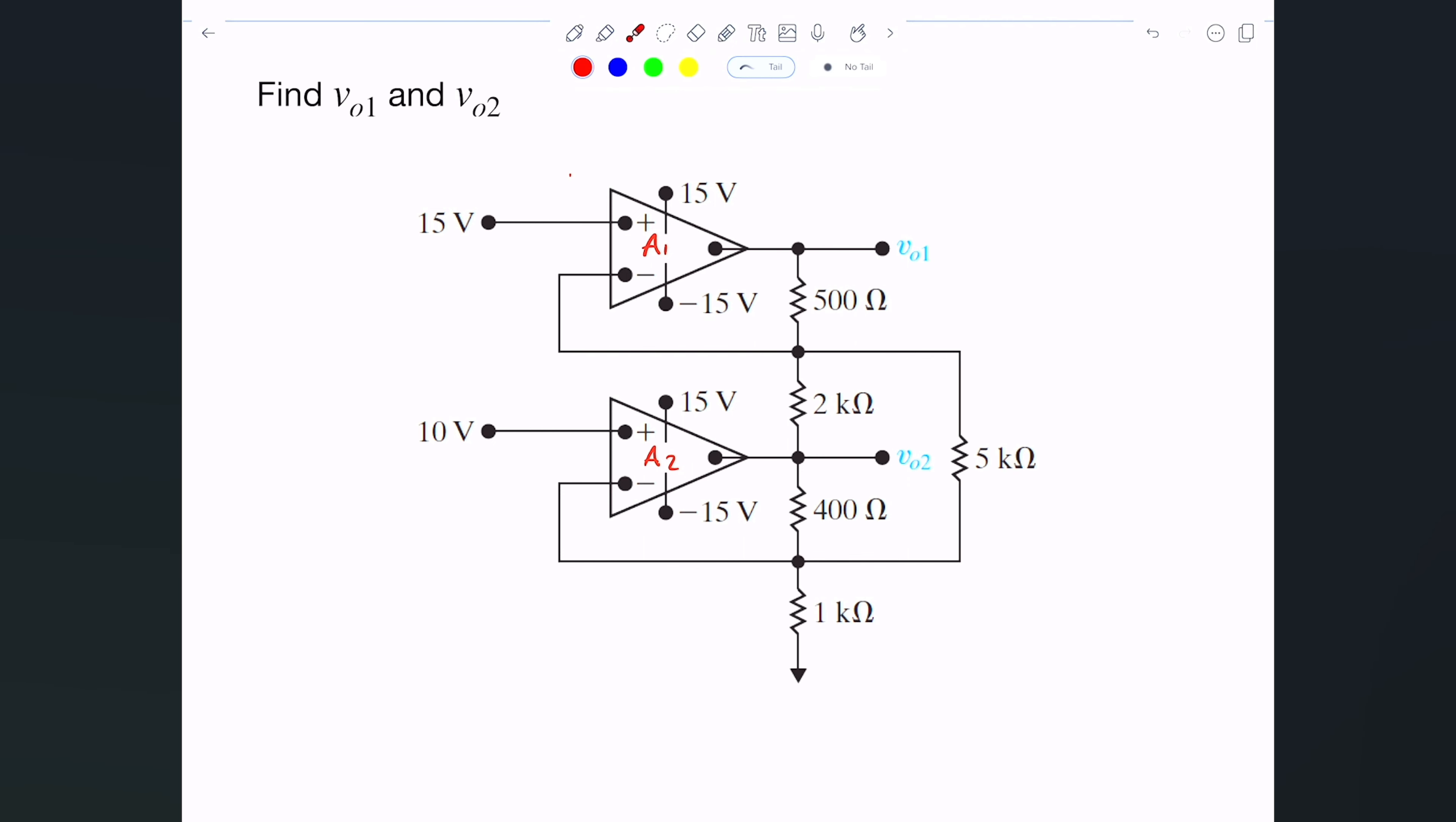These amplifiers are not necessarily connected in cascades. If you think about it, the output of the first one is not directly connected to the input here. It's actually connected to these resistors, and there's a little bit of looping here and a little bit of looping here.